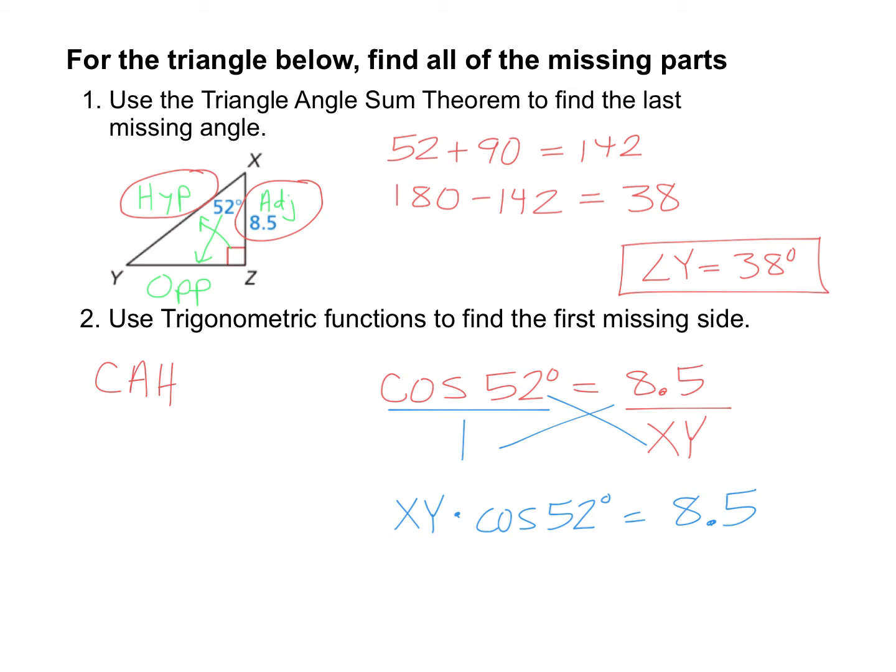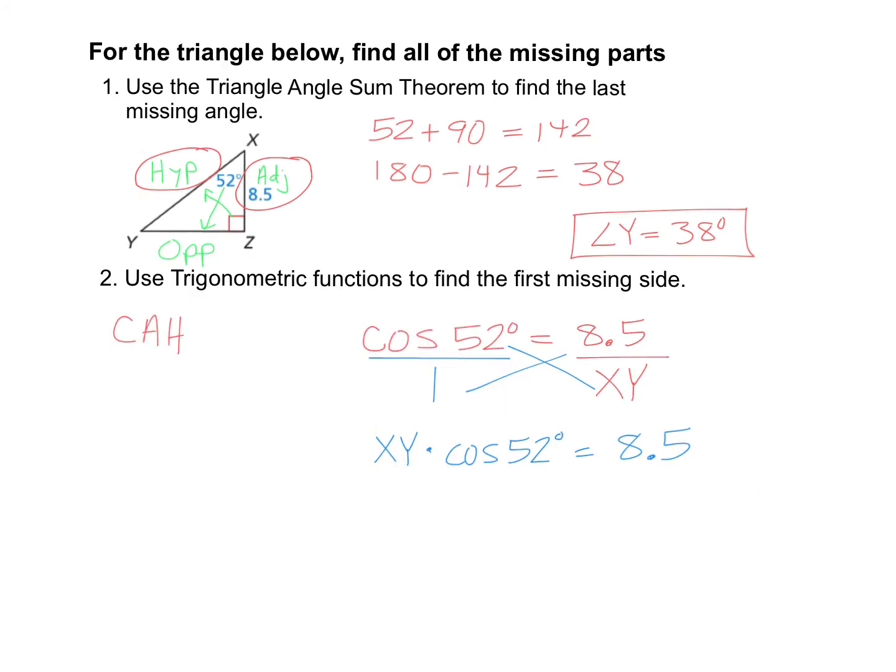Now to get our answer, we have to undo that times by the cosine of 52. I know there's not a spot in your interactive notebook to write this. You can just do this part in your calculator. We'll divide by the cosine of 52 to get the XY by itself.